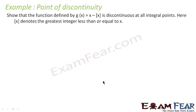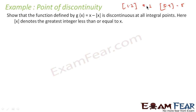Let us take one more example. We have to show that the function defined by g(x) equals x minus [x] is discontinuous at all integral points, where [x] denotes the greatest integer less than or equal to x. So if x is 1.2, [x] is 1. For 5.9 it is 5 — that is the greatest integer less than or equal to x. For 1 it is also 1. Essentially you remove the decimal part and whatever integral value you get is [x]. So the function is x minus [x].